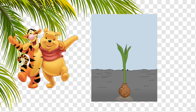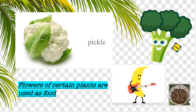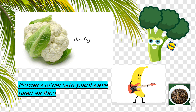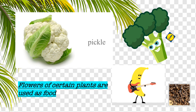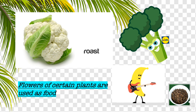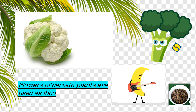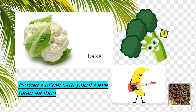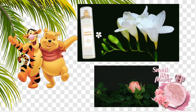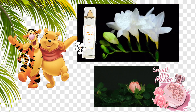A beautiful, amazing animated picture for all of us is showing how a bud turns into a beautiful flower. Do you know, a few flowers of certain plants are used as food? These are healthy and yummy — like cauliflower, banana, celery and clove. A few spices like clove and saffron are obtained from the flowers of plants.